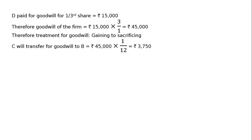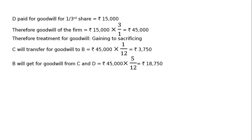C will transfer goodwill to B — C's capital account will be debited and B's capital account will be credited, that is Rs. 45,000 multiplied by 1/12 = Rs. 3,750. B will receive for goodwill from both C and D: Rs. 45,000 is the goodwill of the firm and 5/12 is B's sacrifice share, giving Rs. 18,750. D will transfer the entire premium amount of Rs. 15,000 to only B, the sacrificing partner's capital.